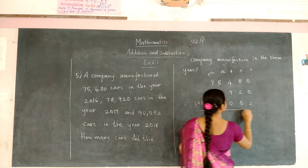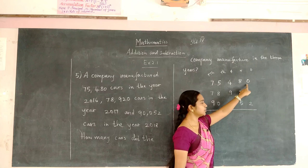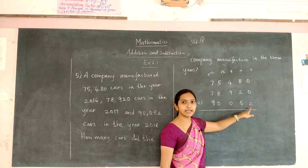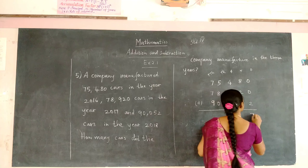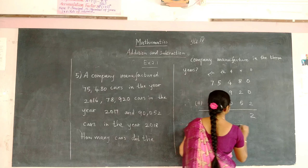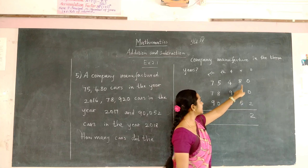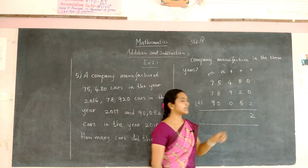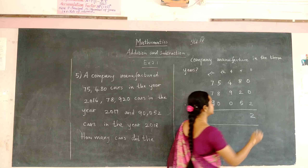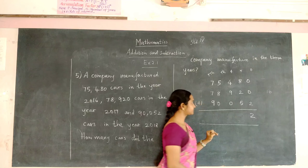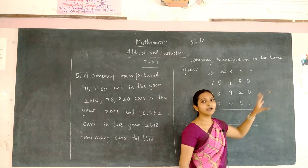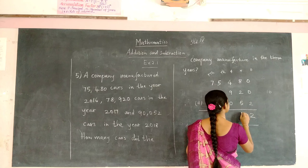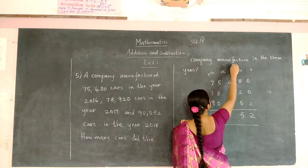Now we are going to add 3 numbers. 0 plus 0 will be 0, and 0 plus 2 will be 2. If you add 0 with any number you will get the same number. Now we are going to add 8, 2, and 5. After 8, start counting 2 numbers: that is 9 and 10. To 10 we are going to add 5: start counting from 10, five numbers — 11, 12, 13, 14, and 15. Write 5 in the 10's place and carry 1 to the 100's place.